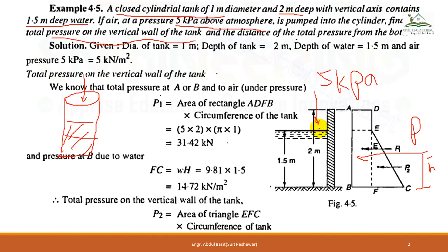P1 is the pressure due to air, which is 5 kPa — so the pressure at the surface is not zero, it is 5 kPa. This 5 kPa pressure is exerted from the top and transferred down to the bottom. The rectangle in the pressure diagram represents this uniform air pressure, and the triangle represents the pressure due to the water at 1.5 meters depth.